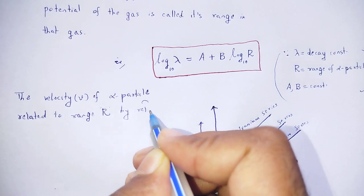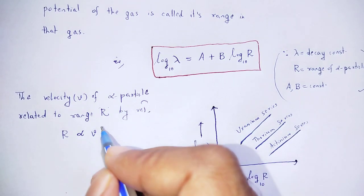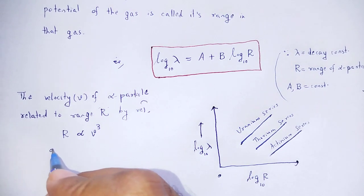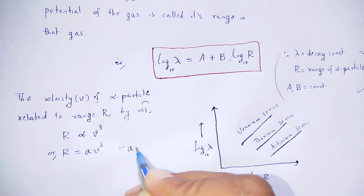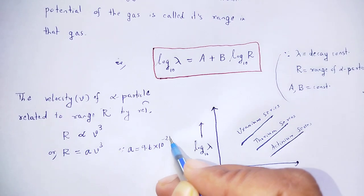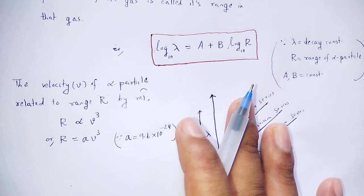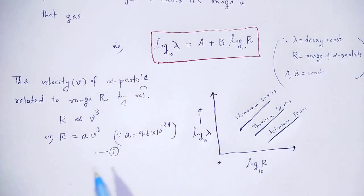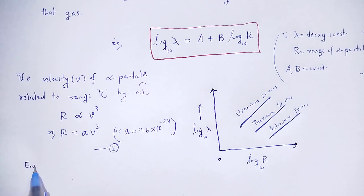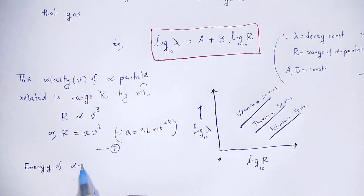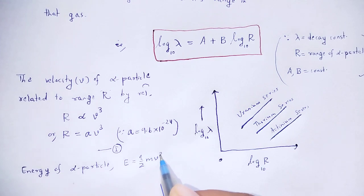The range R of the alpha particle is directly proportional to the velocity of the alpha particle to the power 3: R equals a times v cubed, where the constant a has the value 9.6 times 10 to the power minus 24. This constant value is found out experimentally. This is equation number I.